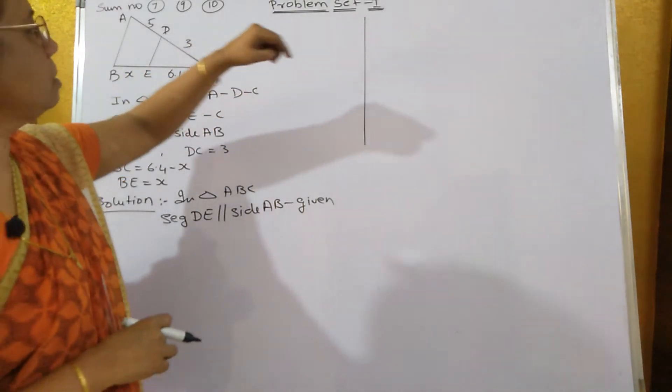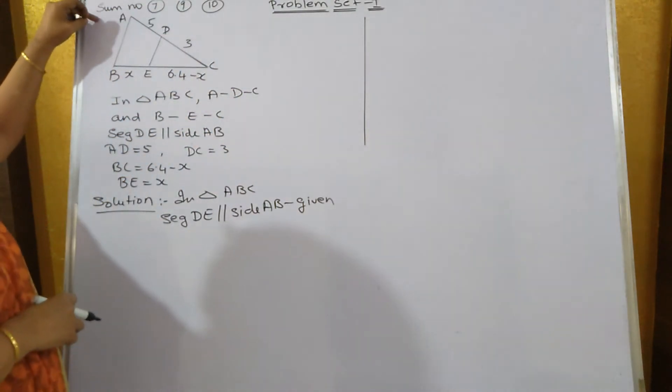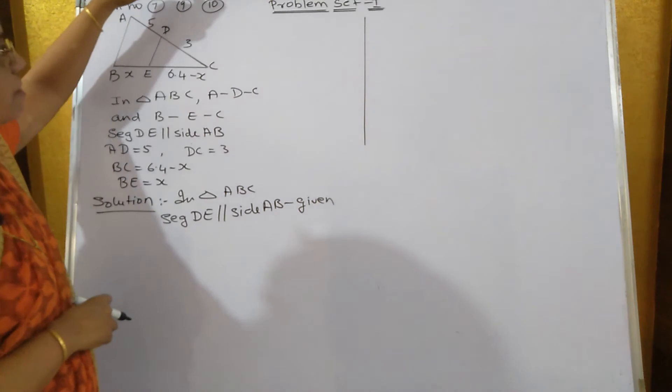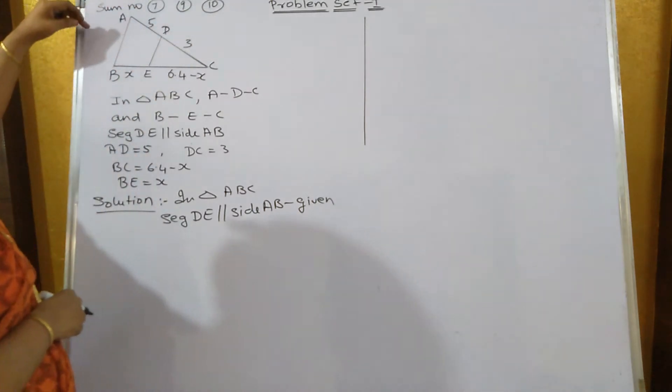Problem set 1 sums connected to practice set 1.2 are sum number 7, 9 and 10. This is sum number 7.